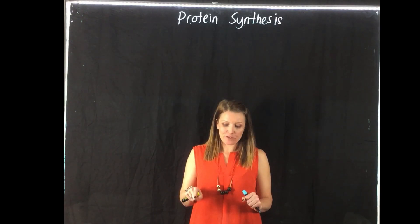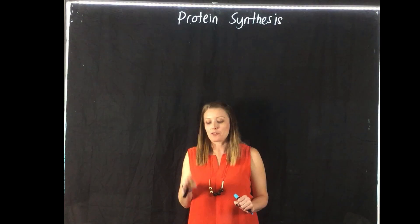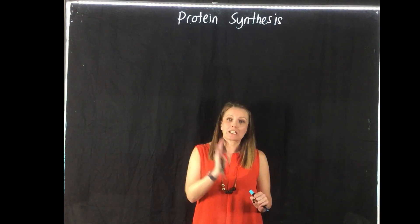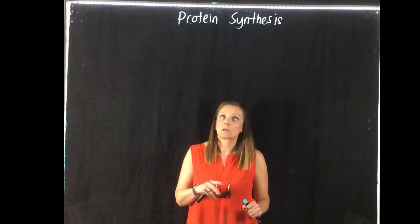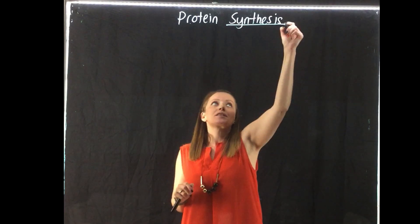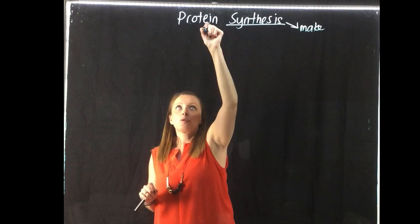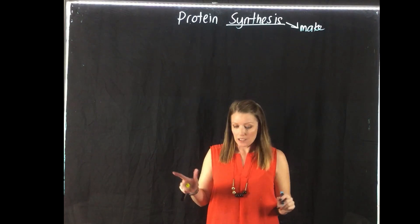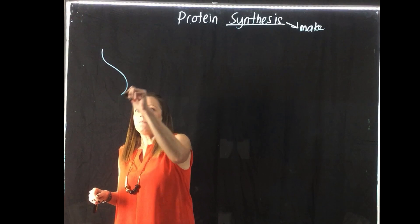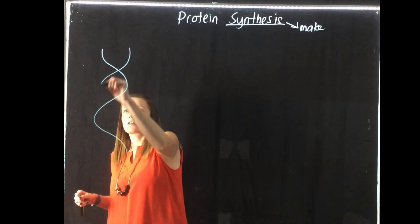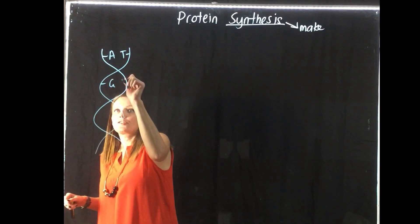So now we've talked about the three different types of RNA and how they're slightly different to DNA. We're now going to look at how each of those different types of RNA is used in protein synthesis. So we know that this word synthesis here means to make.